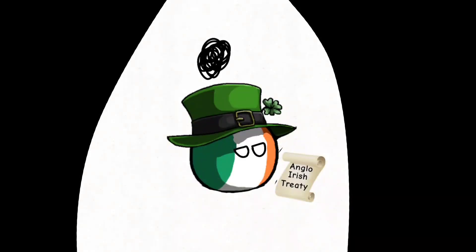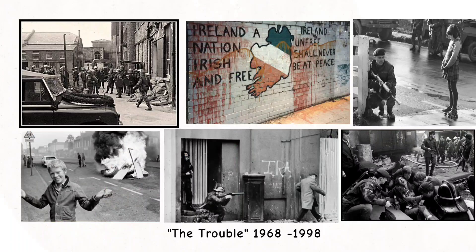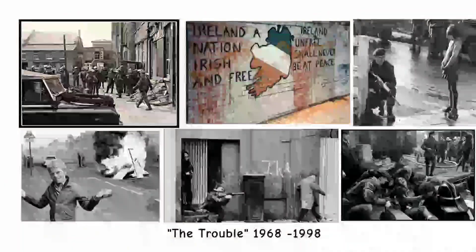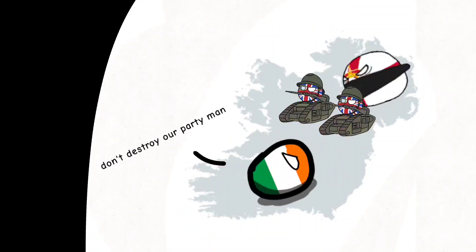The partition of Ireland was opposed by many Irish nationalists, who saw it as a betrayal of their struggle for independence. This led to a period of unrest and violence, known as the Belfast Agreement conflict. The conflict also led to the deployment of British troops in Northern Ireland, which further escalated tensions and violence.